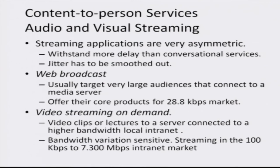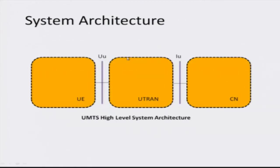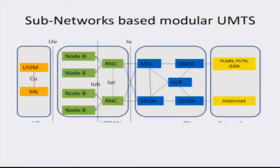The WCDMA network is similar to the GSM network and has three main components: the user equipment, which is your device along with the SIM; the terrestrial radio access network, composed of the base station and base station controller; and the core network, responsible for switching and routing calls to other networks, other carriers, the landline network, and the internet. In the schematic, you have the user equipment on one end, the core network at the other end, and the terrestrial radio access network in between.